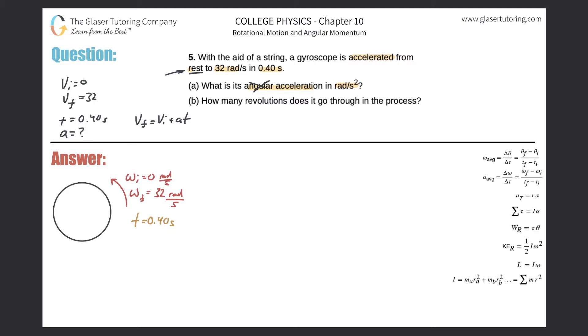Just substitute in omega for the velocity, because omega represents angular velocity. Substitute in alpha for the a, for acceleration, and that would represent angular acceleration.